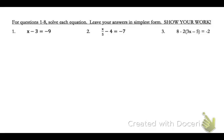Notice on the first one, three is subtracting from the x, so we'll do the opposite to move it to the other side of the equal sign. So if we add three to both sides, we get x equals negative six. And that's our answer.